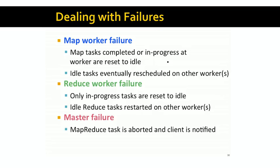What happens if the master fails? If the master node fails, then the MapReduce task is aborted. The client is notified and can then restart the MapReduce task — this is the one scenario where the task has to be restarted from scratch, because the master is typically not replicated in the MapReduce system. Node failures are actually rather rare; a node fails once every three years or once every thousand days. The master is a single node, so the chance of it failing is quite uncommon. The more likely problem is that one of many workers fails, rather than the master.